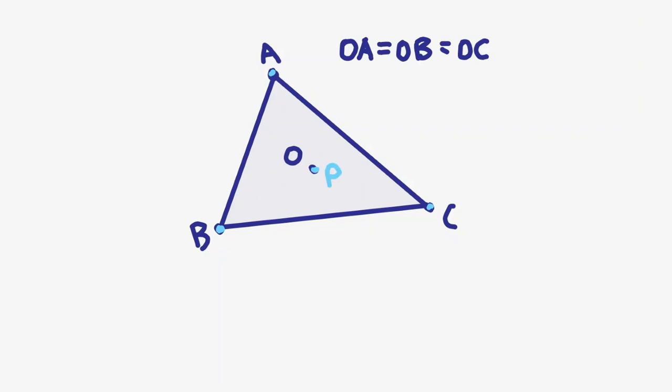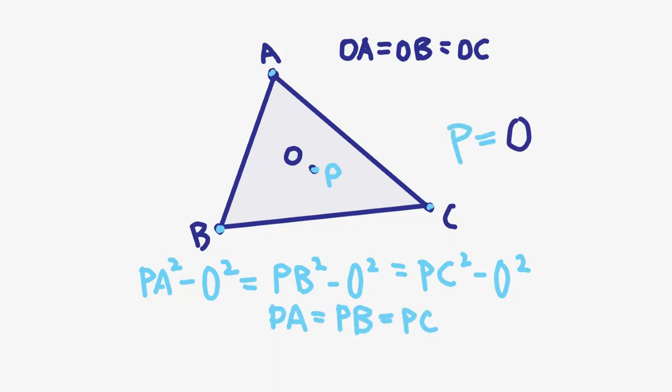The trick is to construct circles of radius 0 at each of the points A, B, and C. The radical center of these circles, by definition, has equal power with respect to all three circles, so we have the following. Therefore, the radical center is just the circumcenter, and thus, the circumcenter exists.